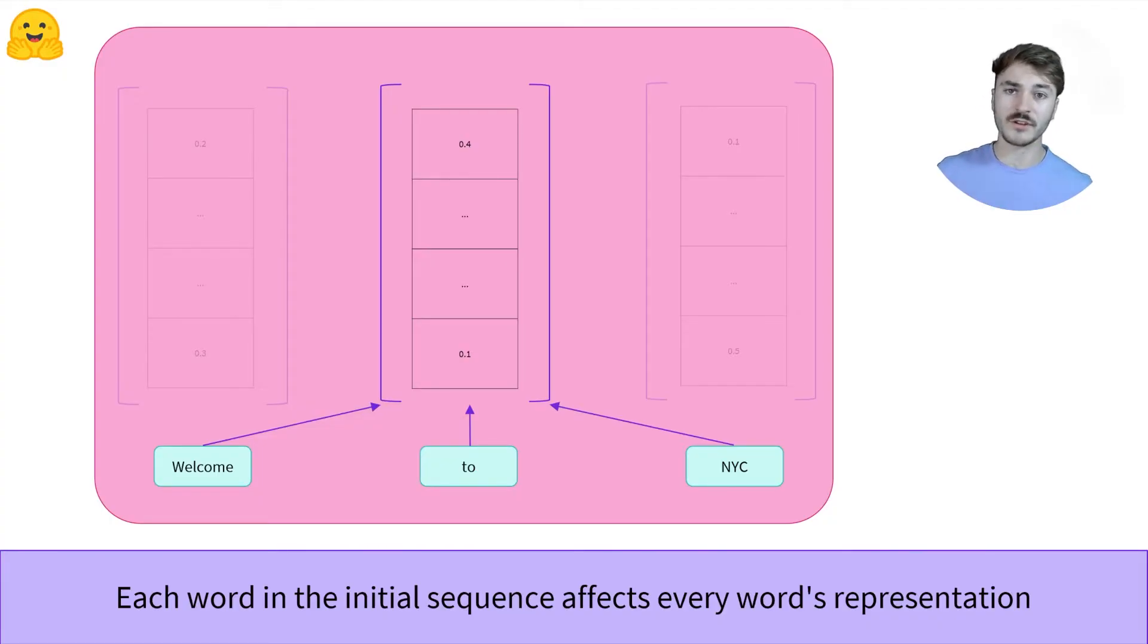It looks to the left context, the words on the left of the one we're studying, here is the word Welcome, and the context on the right, here is the word NYC, and it outputs a value for the word, given its context.